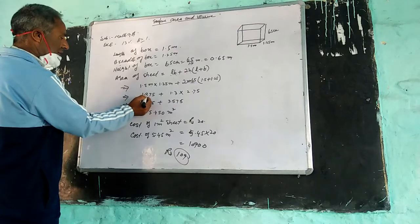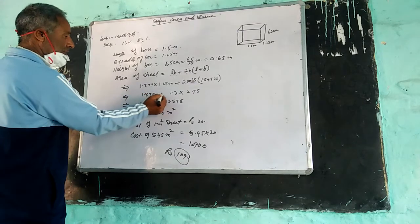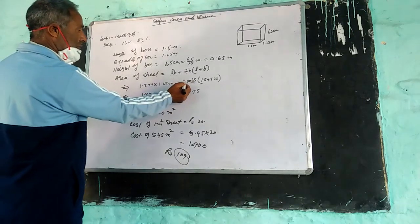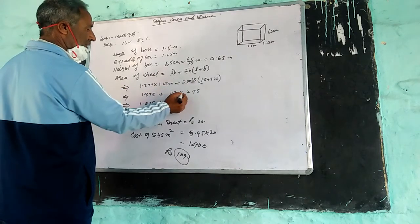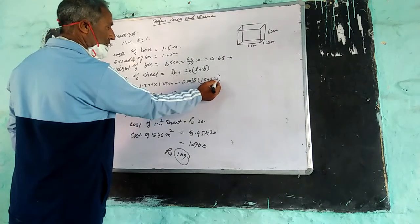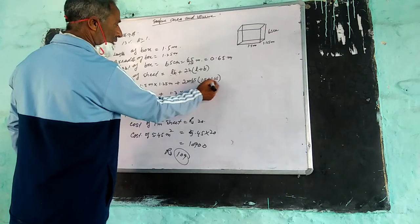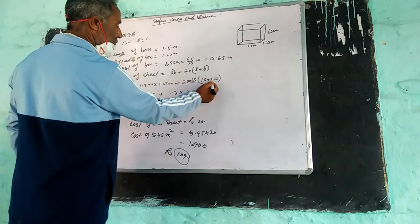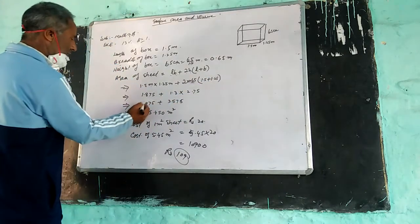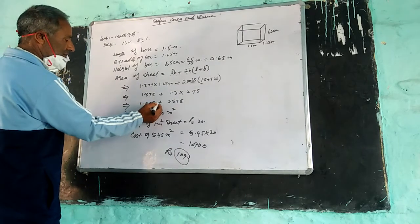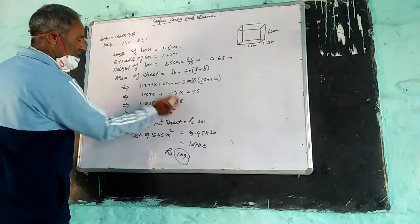It is equal to 1.875 meters square plus 3.575 meters square.